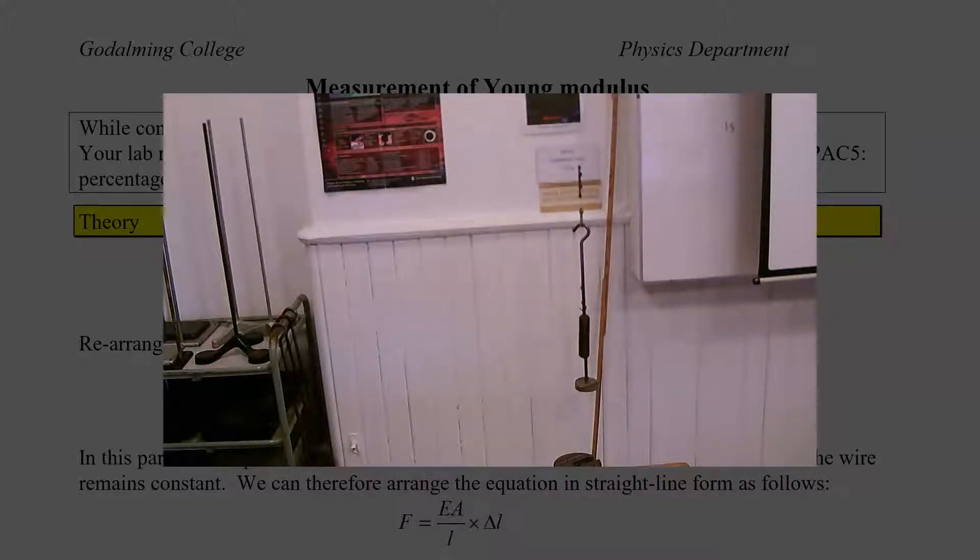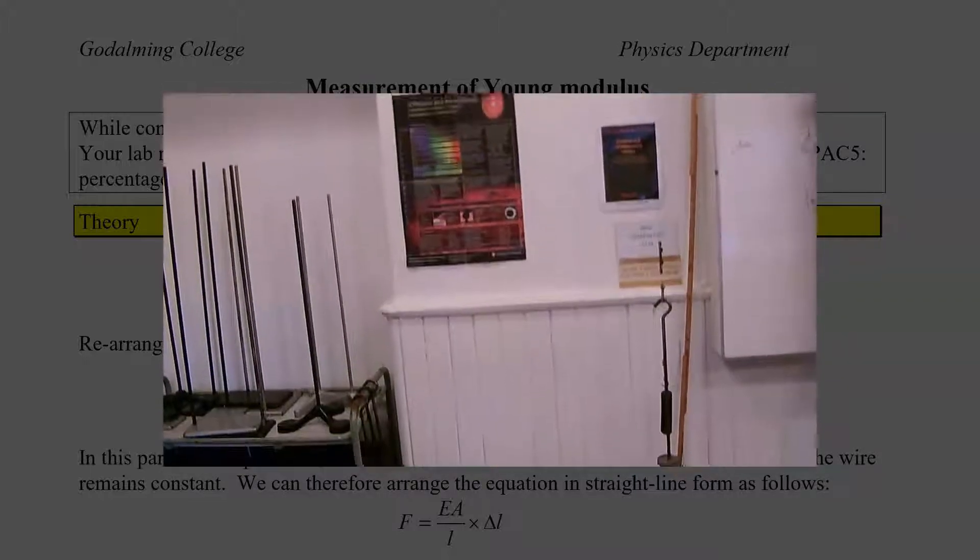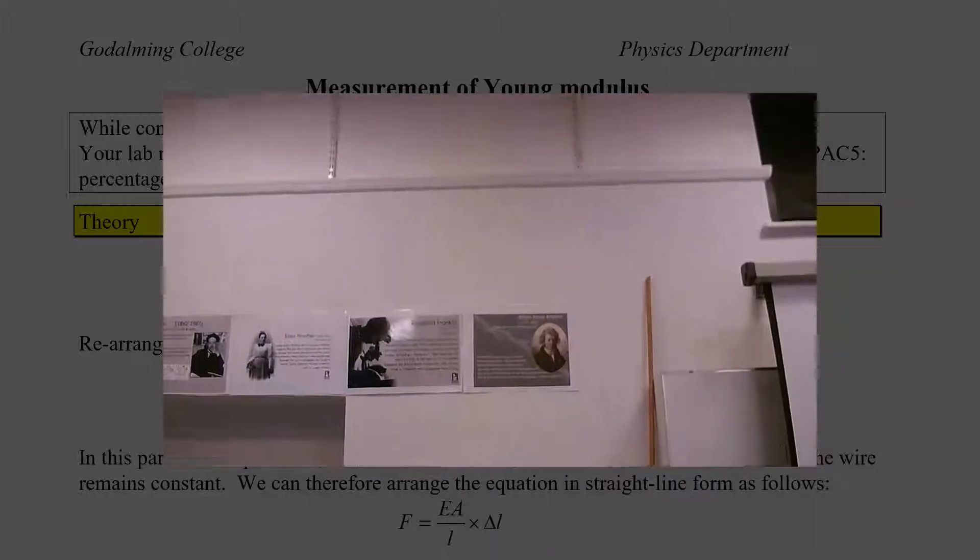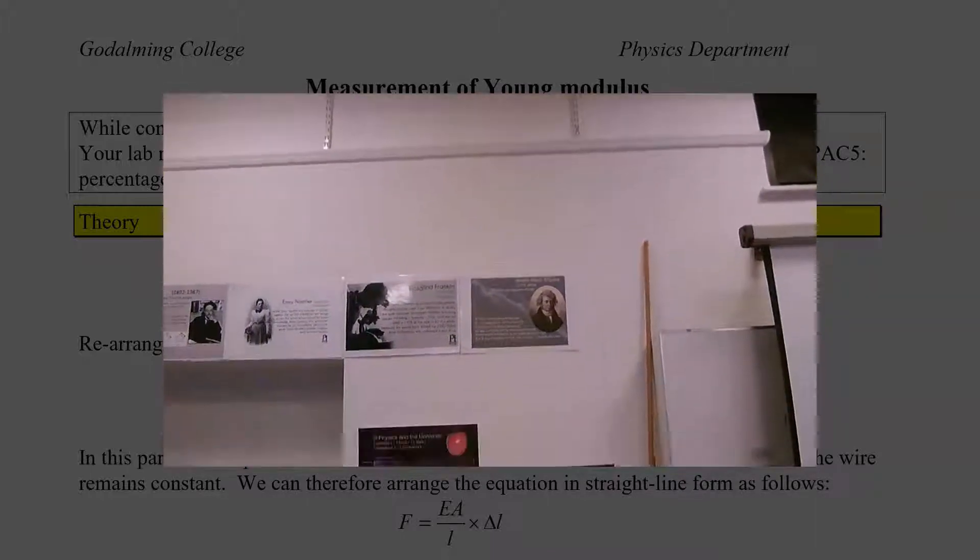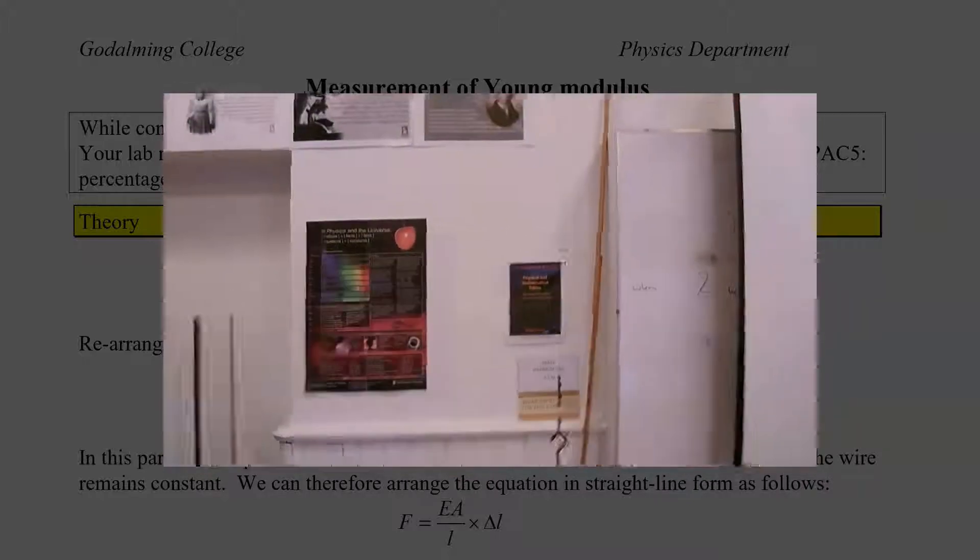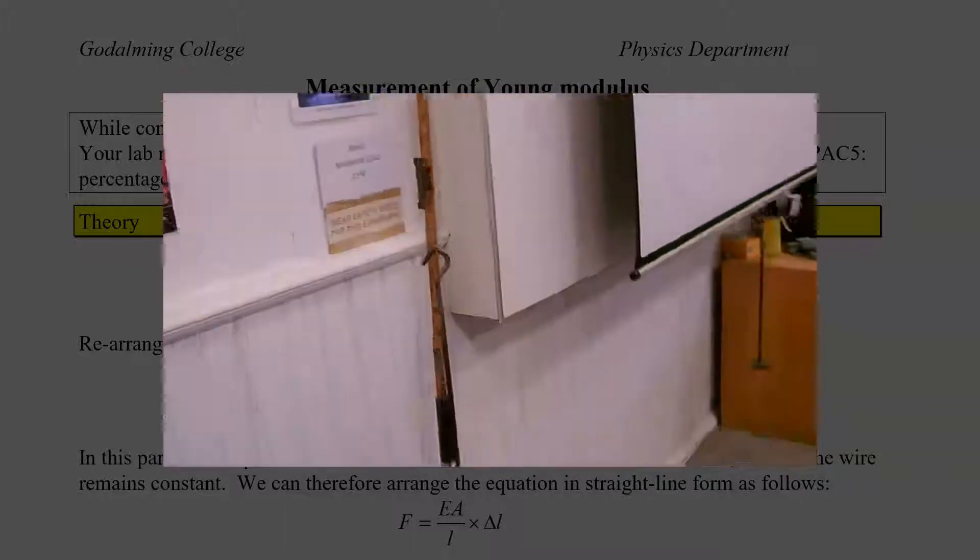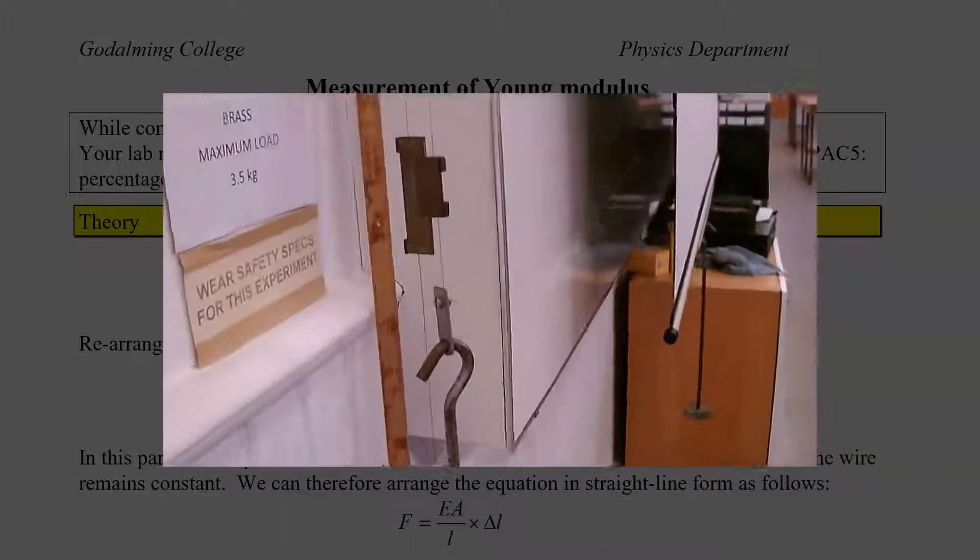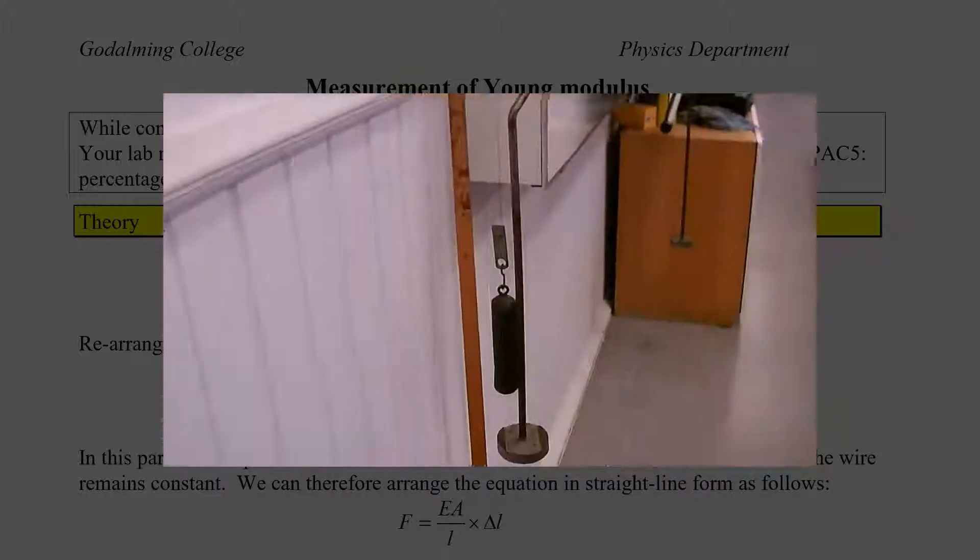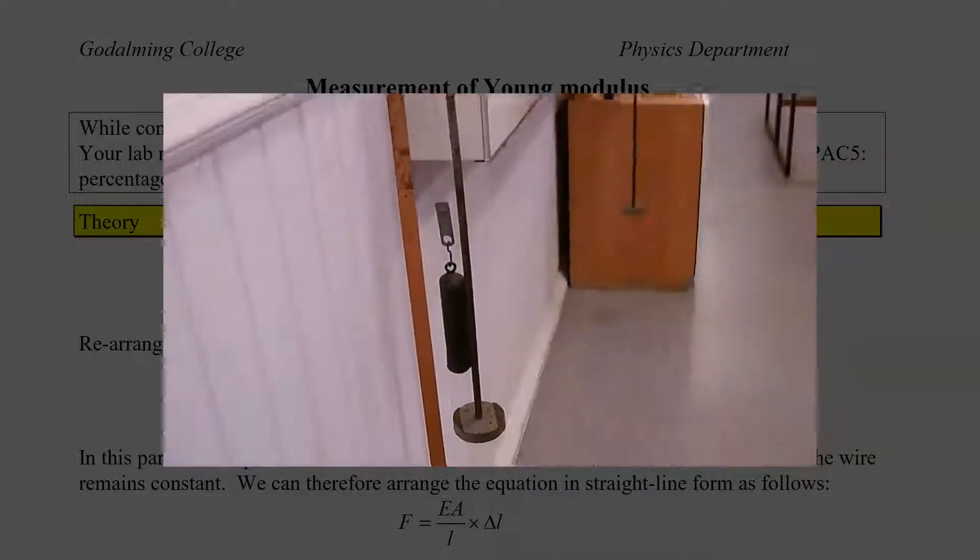At the top end of the lab we have this arrangement here, connected to a bracket high up in the ceiling with two wires. When you look at the two wires you can see that they have been set up so that we have a sliding vernier scale set between them.